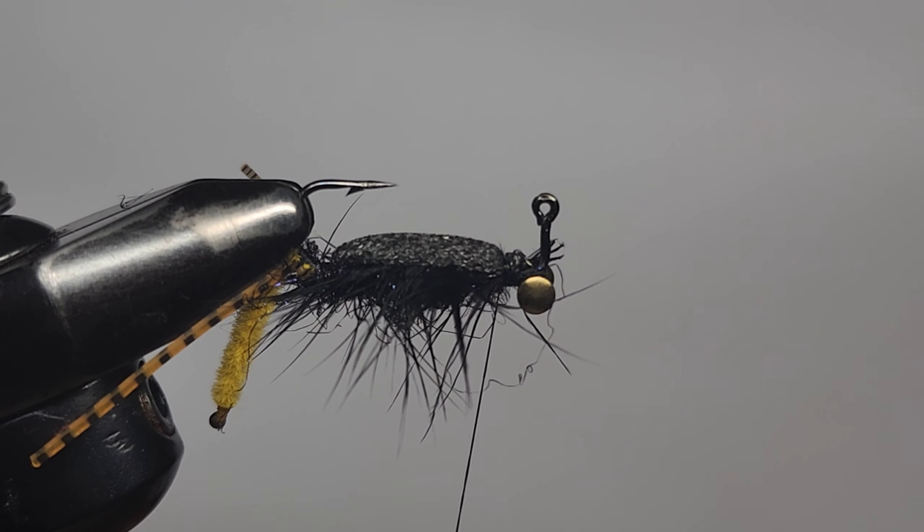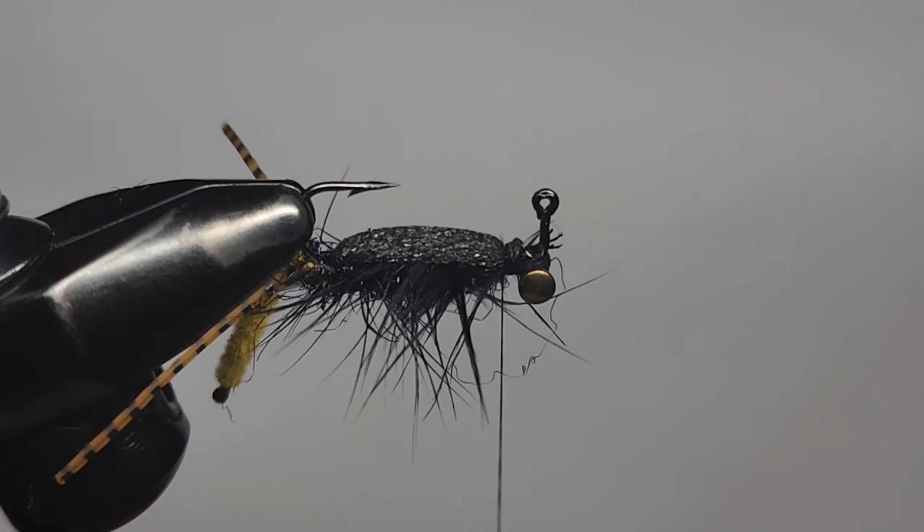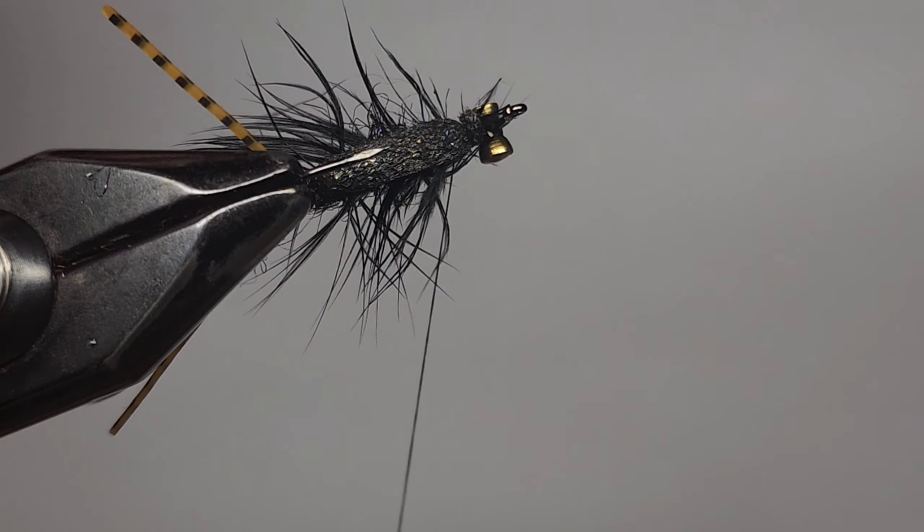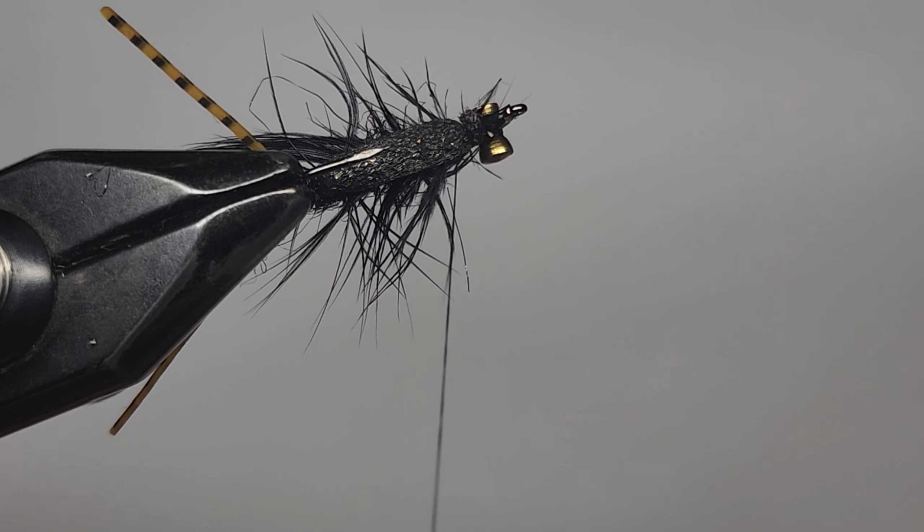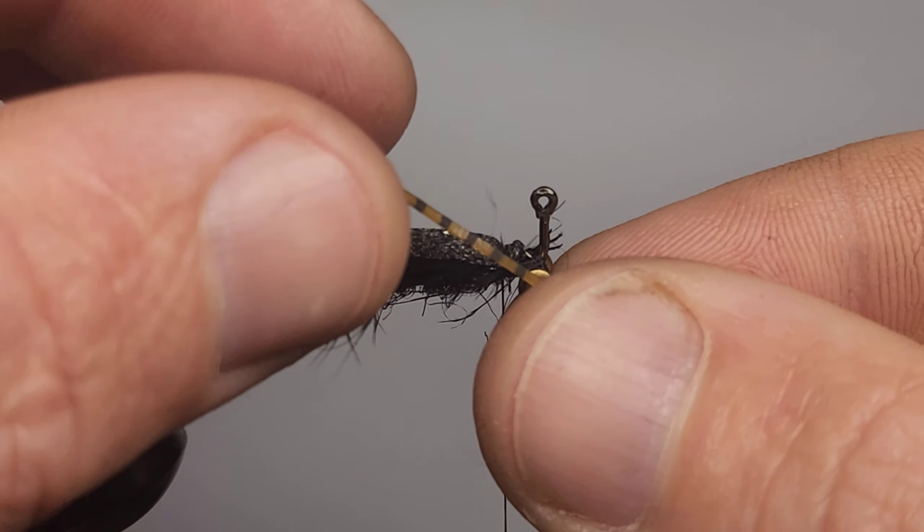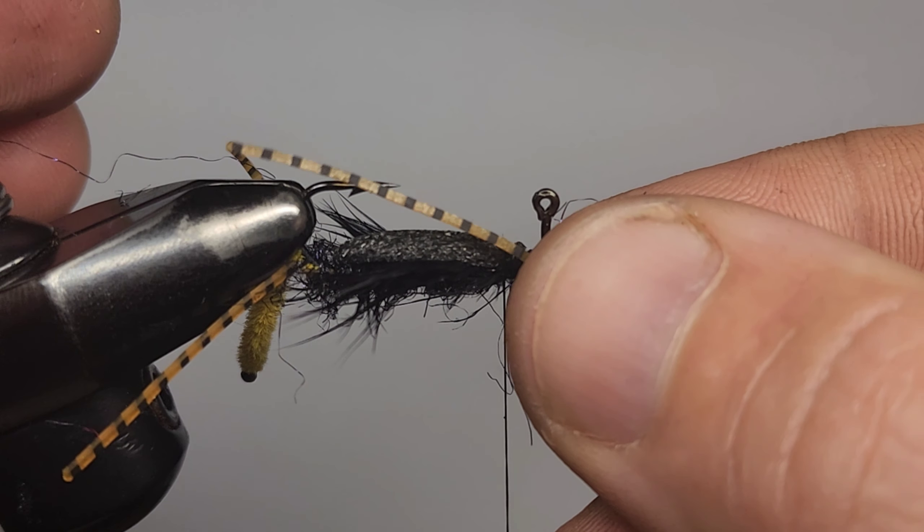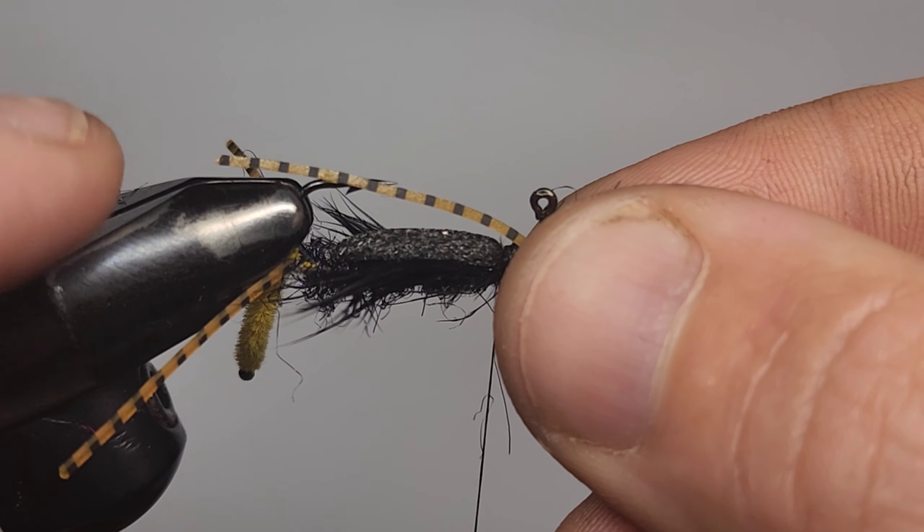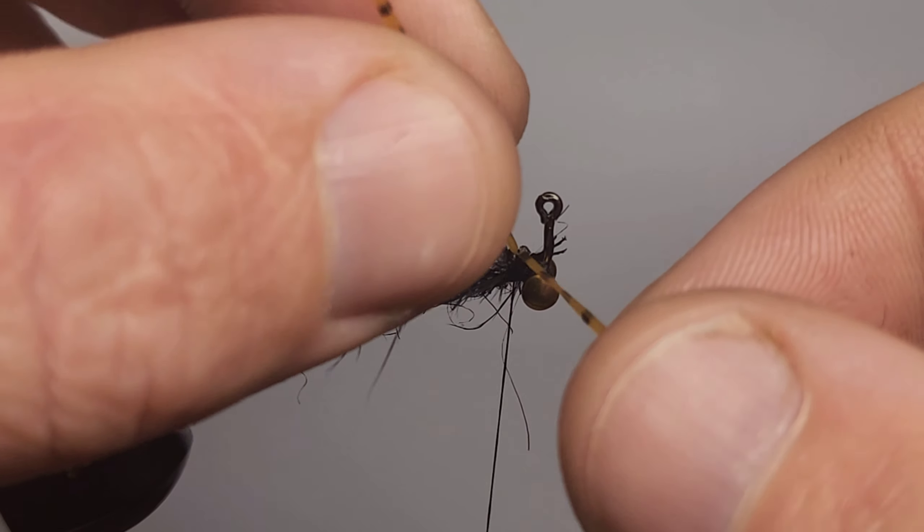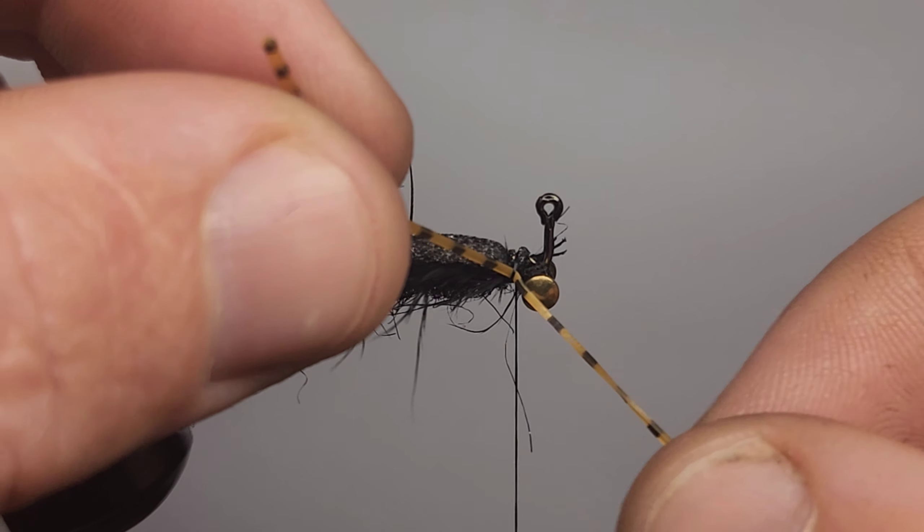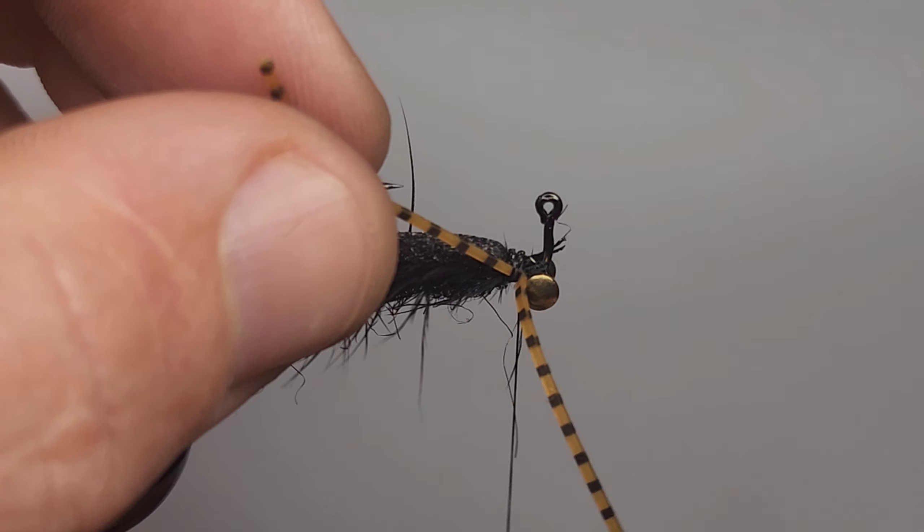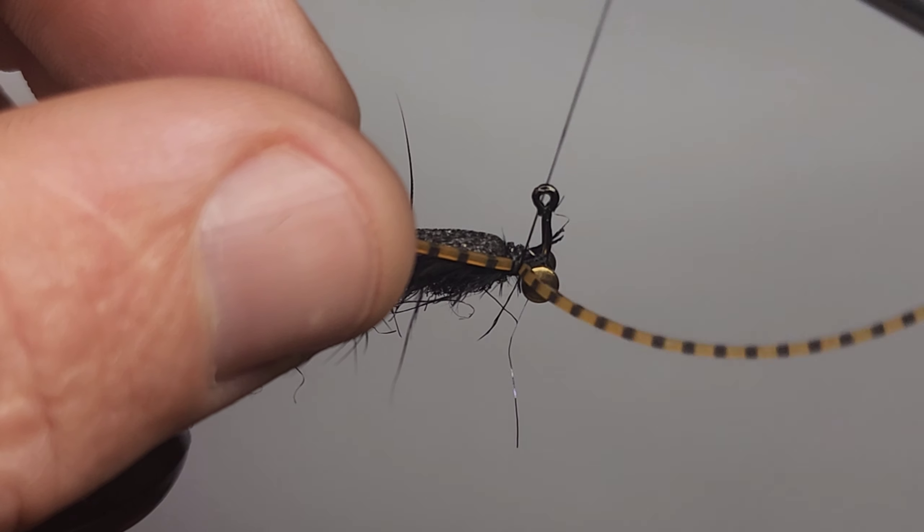Now you should have something that resembles that. Now we're going to tie in a couple more legs. So we'll make them just longer than the hook. We'll tie that one in there and just bring it down to the side of the hook. Give it another wrap if you need to. Happy with that.